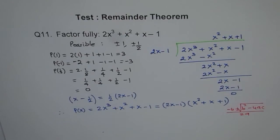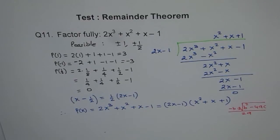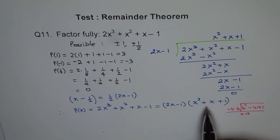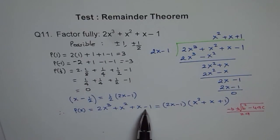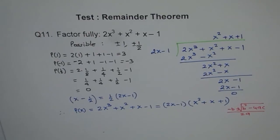So the answer is P(x), which is 2x³ + x² + x - 1, is equal to (2x - 1)(x² + x + 1). Thanks.